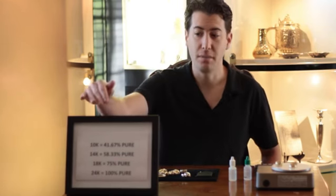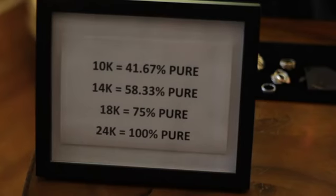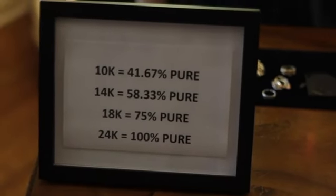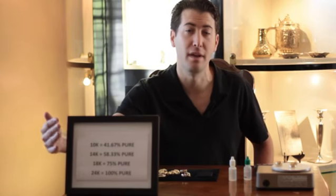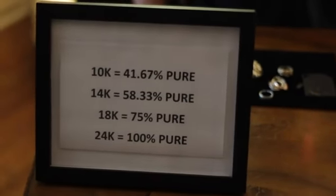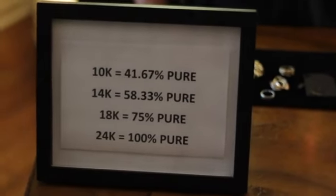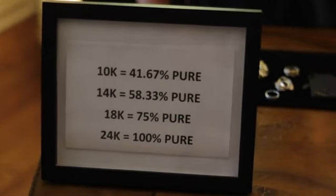I have a chart below that will identify all these different carats of gold. These are the most common carats in the United States: 10 carat, 14 carat, and 18 carat. This is typically what we see in most jewelry — 10 carat being 41.67% pure, 14 carat being 58.33% pure, and 18 carat being 75% pure.